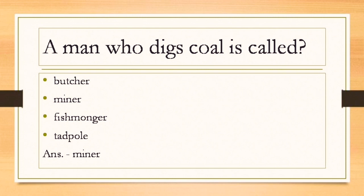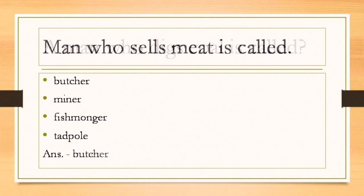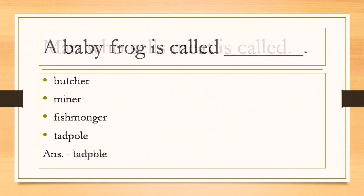A man who digs coal is called what? The man who digs coal is called a miner. So option B is the answer. A man who sells meat is called what? The man who sells meat is called a butcher. So option A is the correct answer. Baby frog is called tadpole. So option D is the answer.